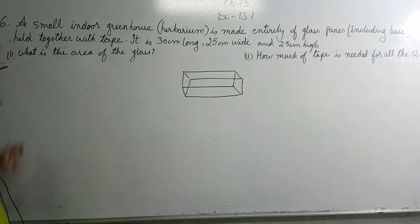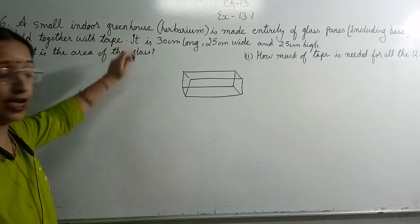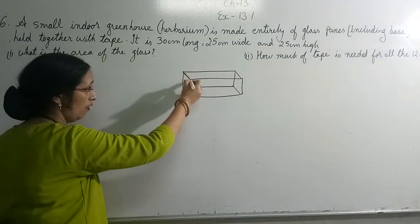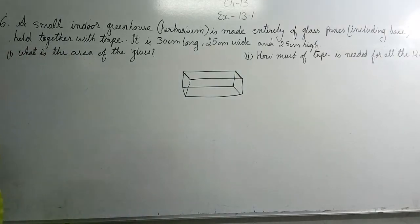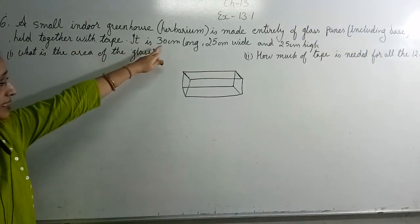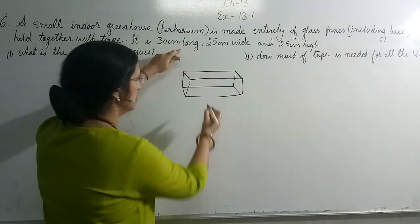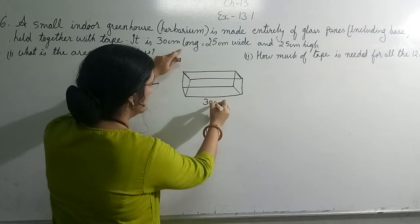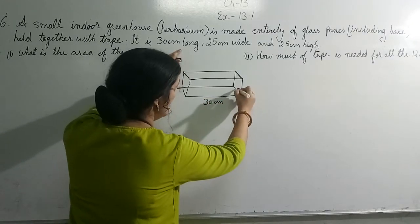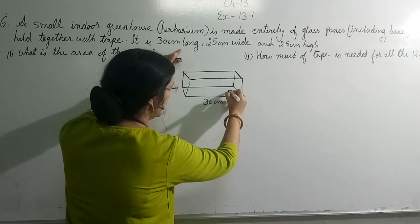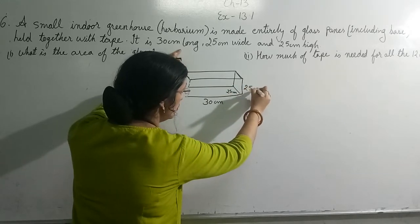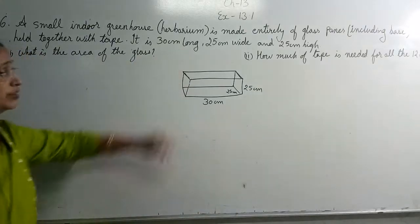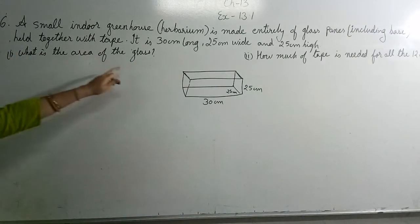Then they are telling it's held together with tape, and all these pieces of glass are joined with tape. The measurements they are telling: 30 centimeter long, width is 25 centimeter, and height is also 25 centimeter. Here, what is the area of the glass?